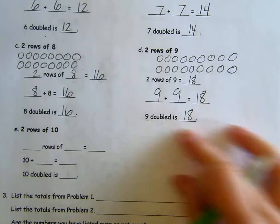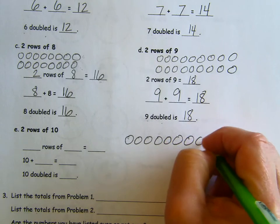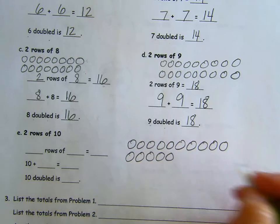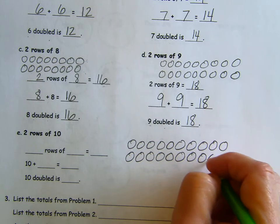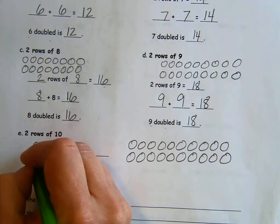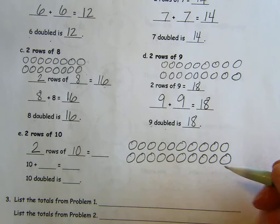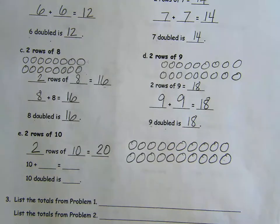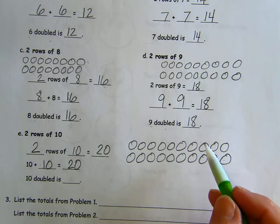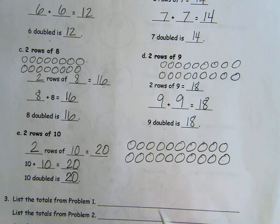Two rows of ten. I'm going to use all this space out here. That's a lot. One, two, three, four, five, six, seven, eight, nine, ten. One, two, three, four, five, six, seven, eight, nine, ten. Good. So how many rows of ten do we have? Two. Two rows of ten equals ten and ten more is 20. So ten plus ten equals 20. If I have ten and I double it, ten doubled is 20.